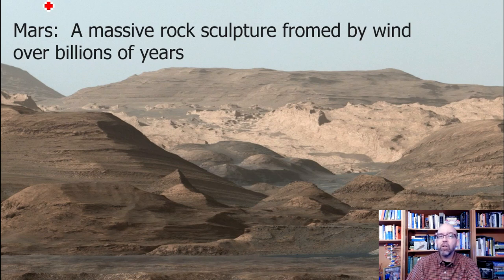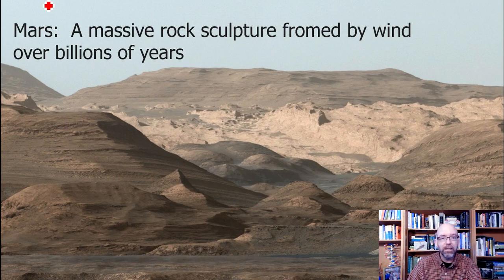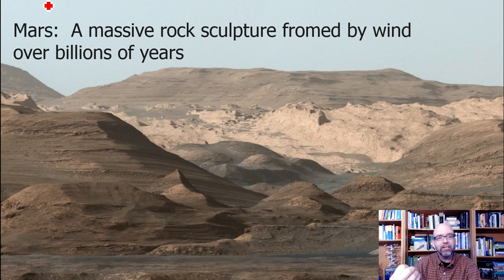Wind takes a long time — an extremely long time — to have the same effect that water does on rock material. Mars really speaks to us of a world that is extremely ancient and has taken a long time to form into the way it looks today. So that's relative rock dating and evidence of an ancient world — in this case, the ancient world of Mars.